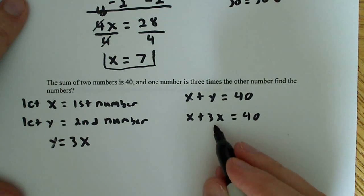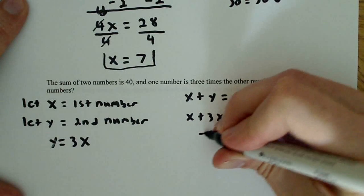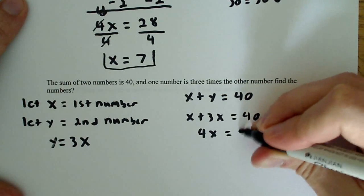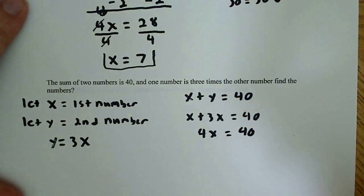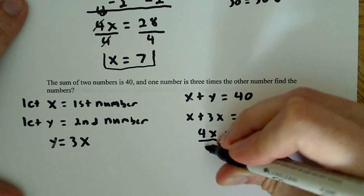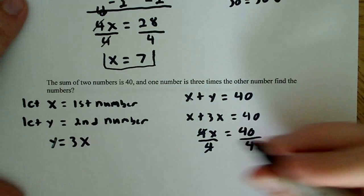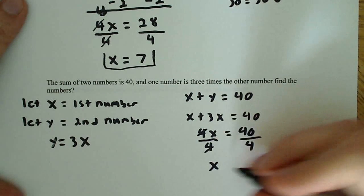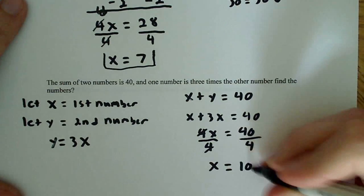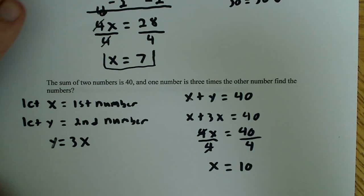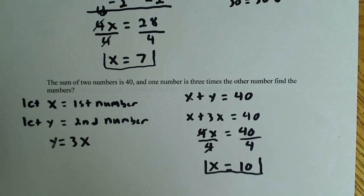Now, 1x plus 3x is simply 4x, so 4x is equal to 40. Now in order to solve this part and get x by itself, we want to divide both sides by 4, the 4s cancel out on this side, we're left with just x, and that's equal to 10. So that's our first number.